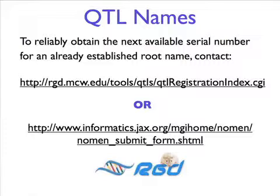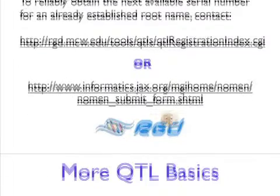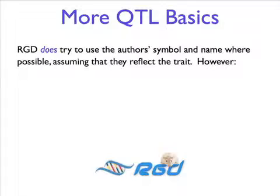Searching for the next number in the public version of that database is not advisable, as another group may have a number reserved but private, pending publication. When naming QTLs, we try to use the author's symbol and name where possible, assuming that they reflect the trait.